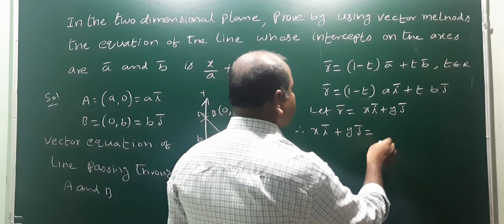Now we add these two results. Therefore x/a + y/b = (1−t) + t = 1. So x/a + y/b = 1, which is the required answer.